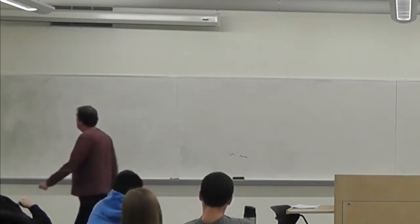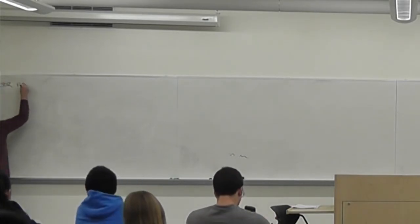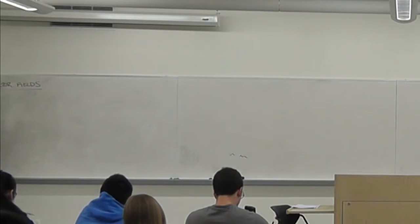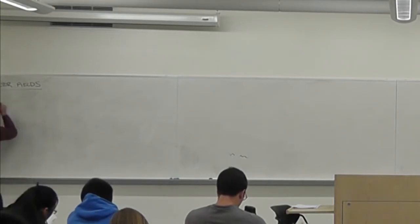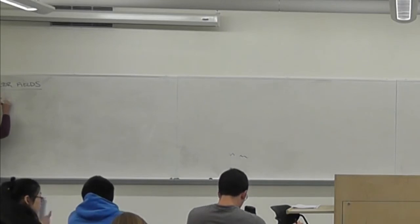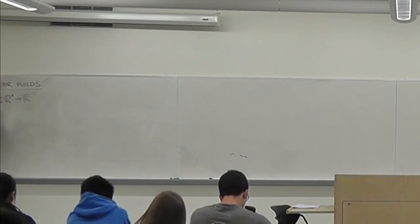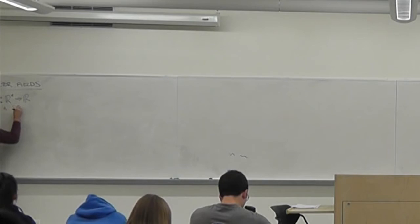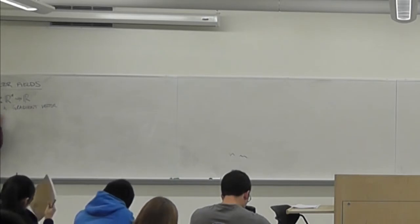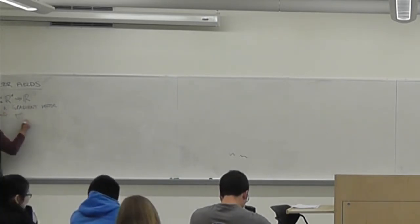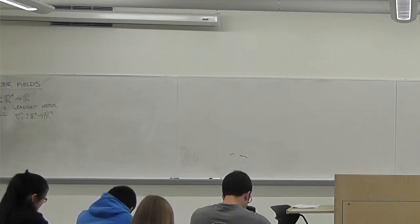Where we left off, we were talking about vector fields. So I have some F from R to R, and this can give us a gradient vector field, grad F, which is from Rn to Rn. So I talked about this a little bit.